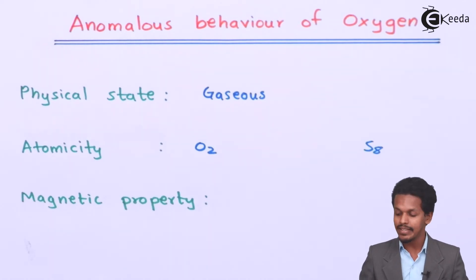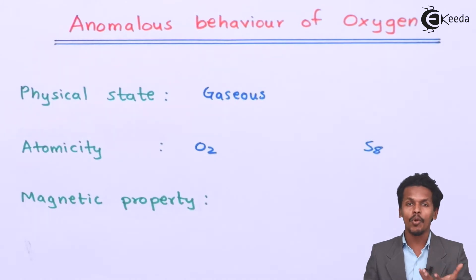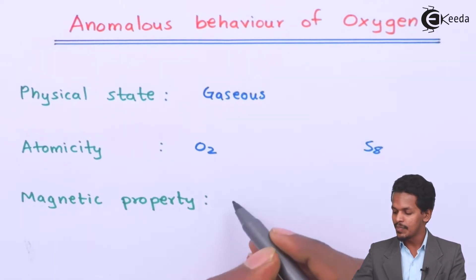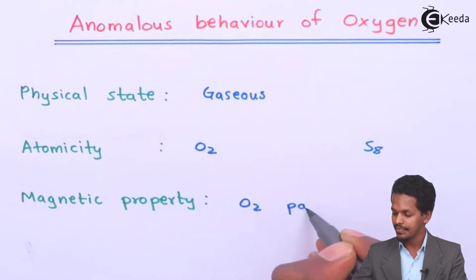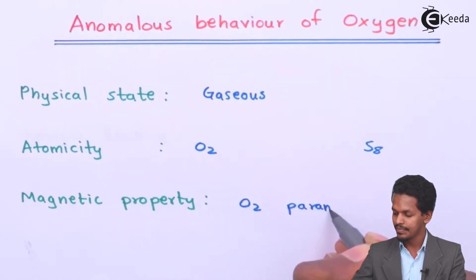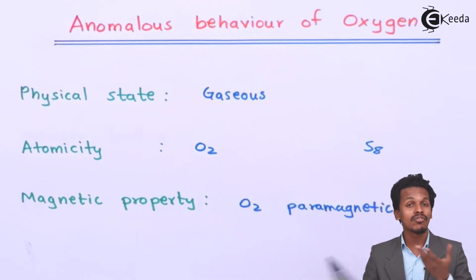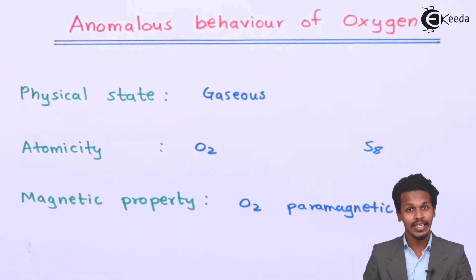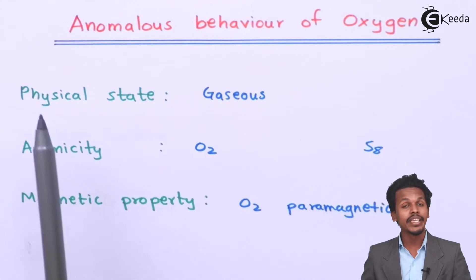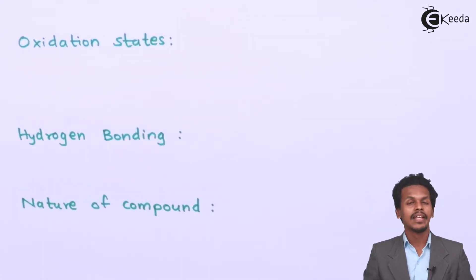Moving on to magnetic property — it has been found through the molecular orbital diagram that oxygen is paramagnetic in nature, while the rest of the Group 16 members are diamagnetic.